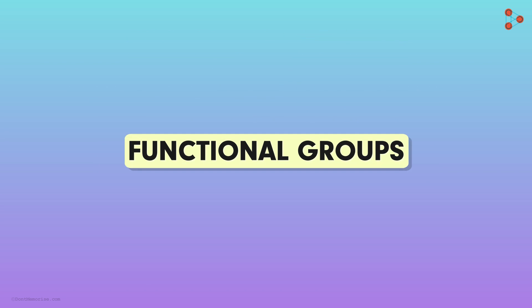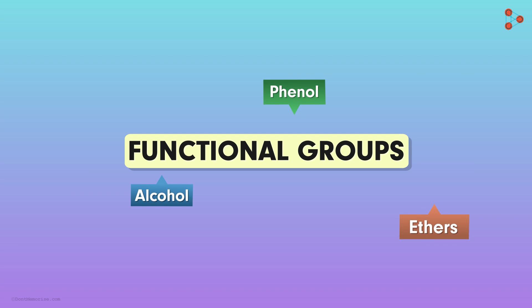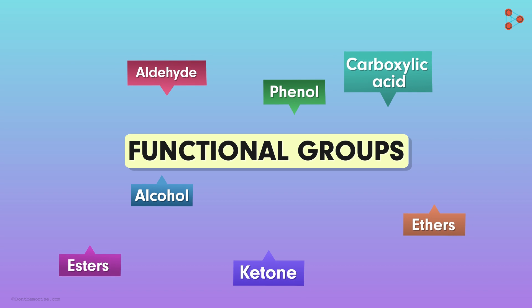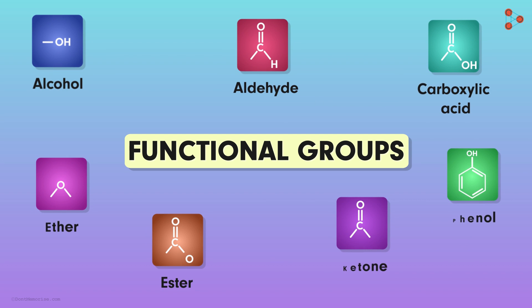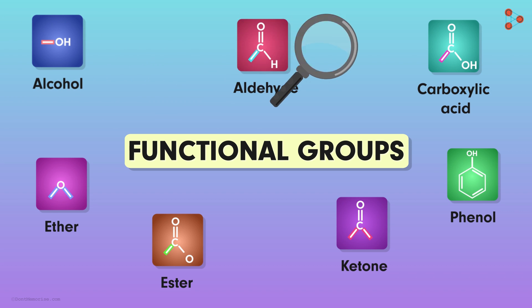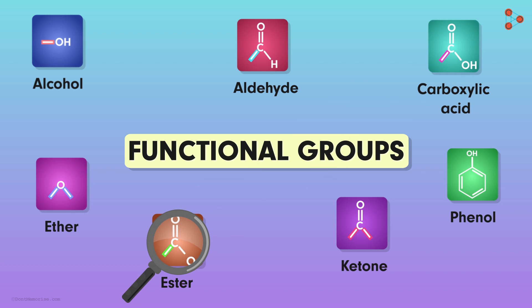Have we come across any of the functional groups ever? Yes, we have heard many names like alcohols, phenols, ethers and so on. Look at the structures carefully. What do you notice? It helps us understand that they have atoms which can form at least one bond with any other atom — at least one atom in the complete group is ready for bond formation.